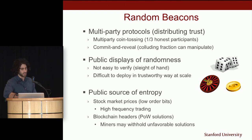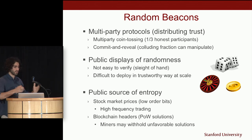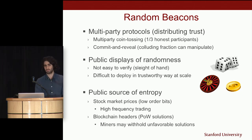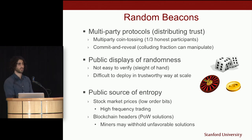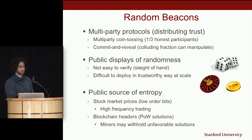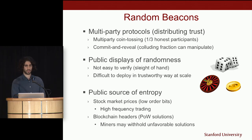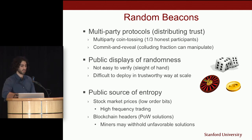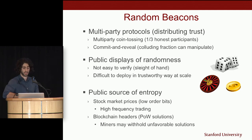Public displays like coin tossing or rolling dice are not easy to verify and are especially difficult to deploy at scale in a trustworthy way. Using public sources of entropy such as stock market prices — whose low-order bits are thought to be hard to predict — or blockchain headers, which contain entropy as the pre-image of a hash target, are also problematic since high-frequency trading firms can manipulate low-order bits and miners may withhold unfavorable solutions.